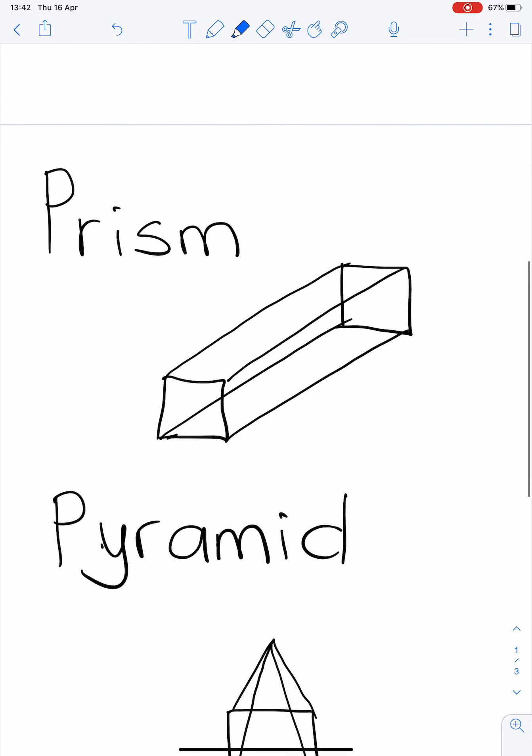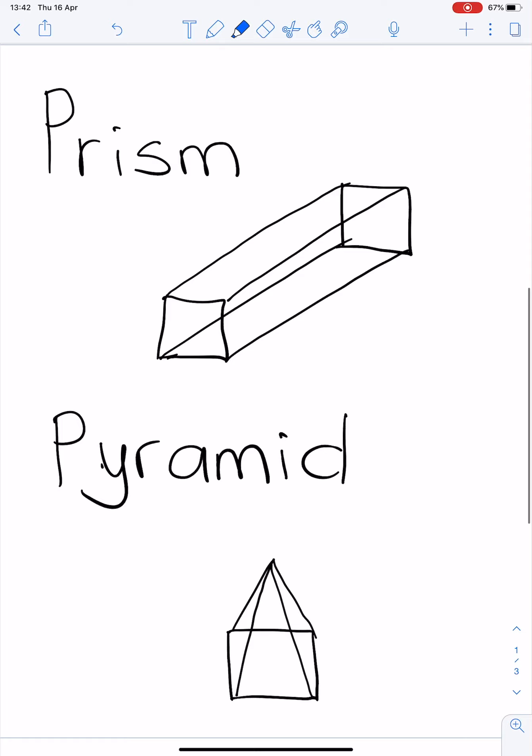If we move on to prisms and pyramids, let's look at the difference. A prism has two identical shapes, one at each end, and they are joined together by rectangles.